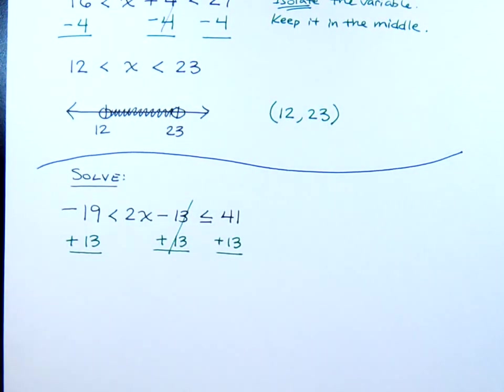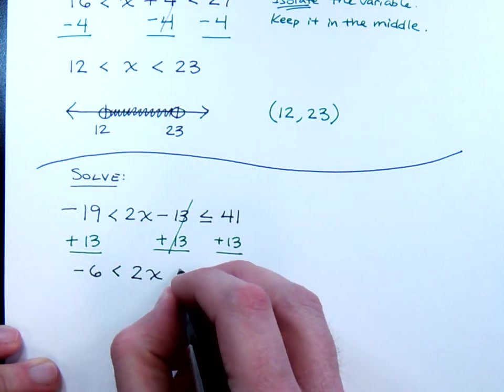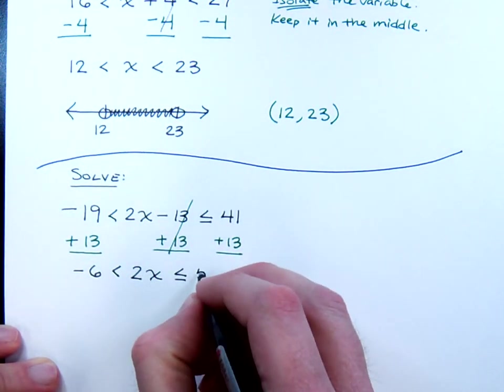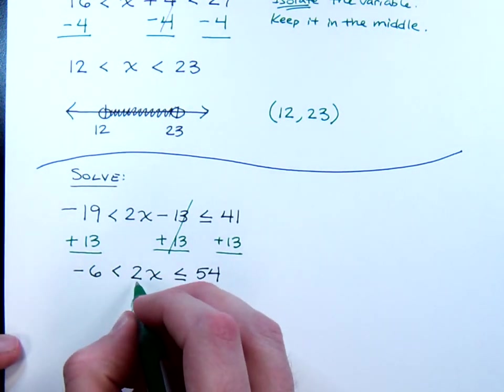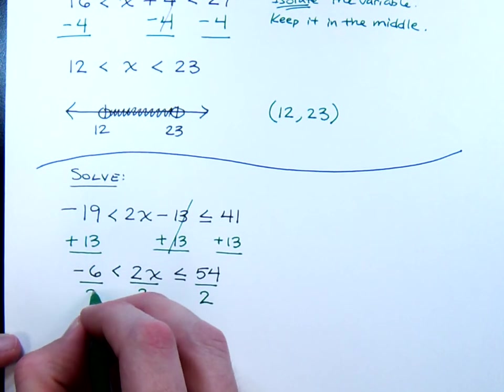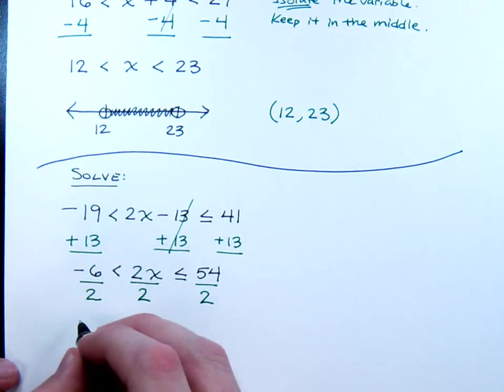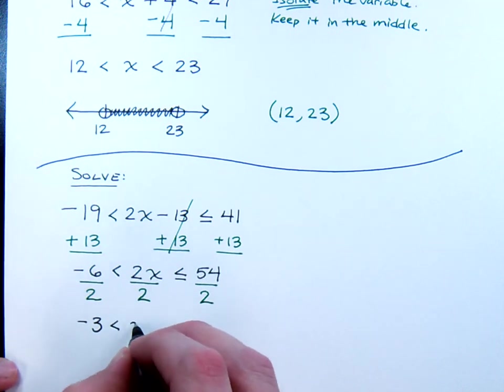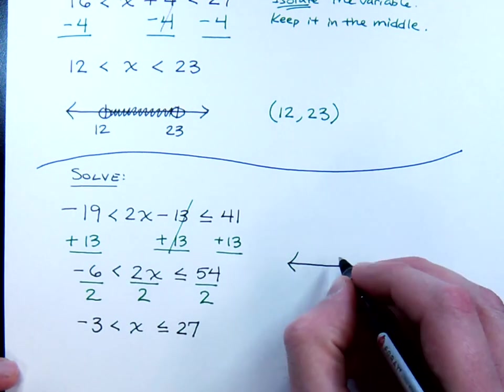Now let's write the inequality that we have left. We have negative 6 is less than 2x, and that's less than or equal to 54. Well, we're almost done. Just one small step left until we have completely isolated the variable, and that is getting rid of this 2 here. Just like all the other inequalities and equations we've run across, use that multiplication property and divide all pieces by that coefficient. Divide by 2. So my inequality from left to right is negative 3 is less than x, and that's less than or equal to 27.